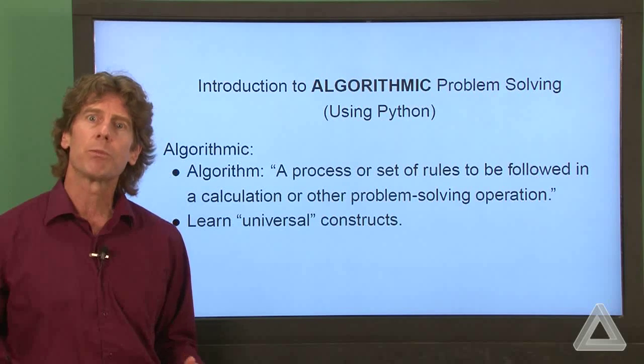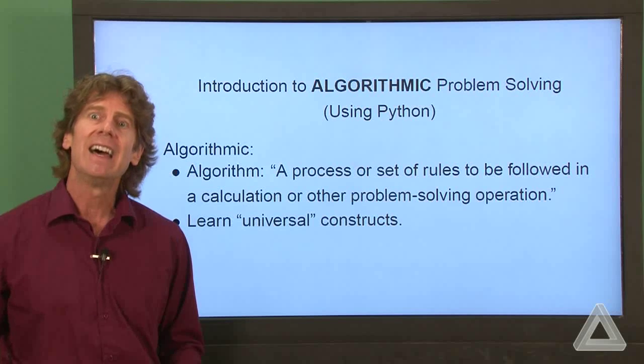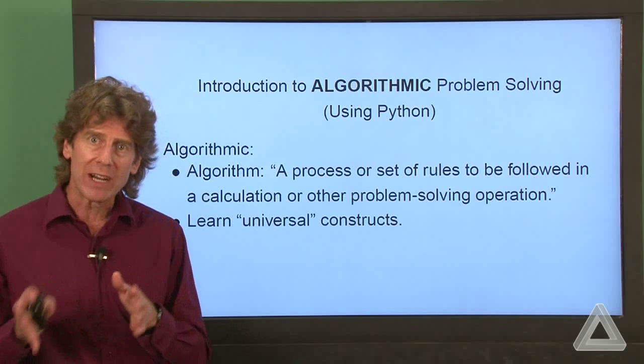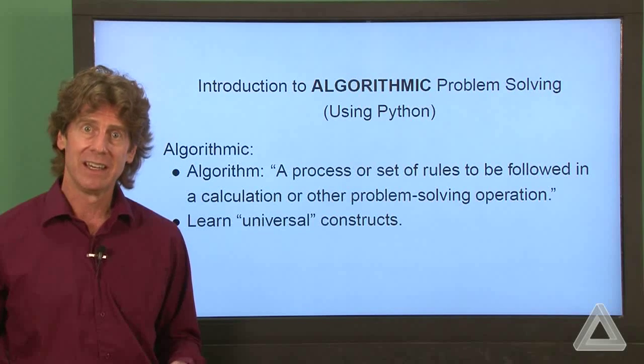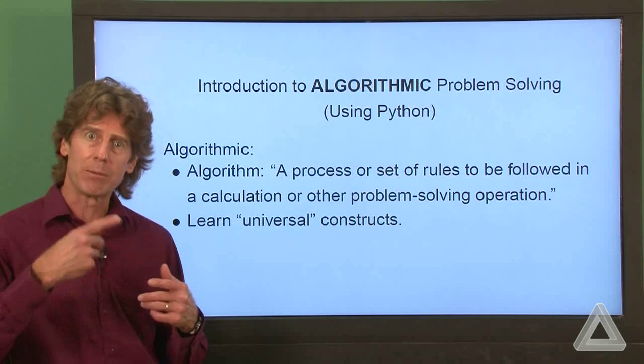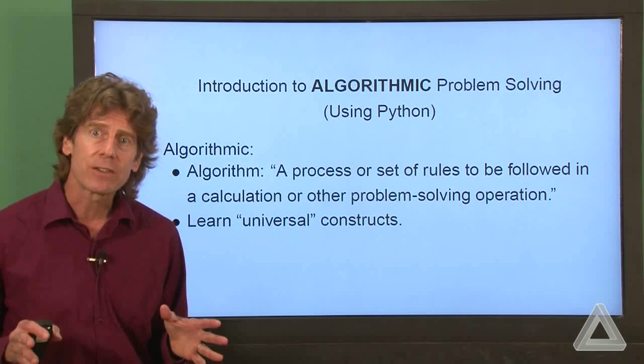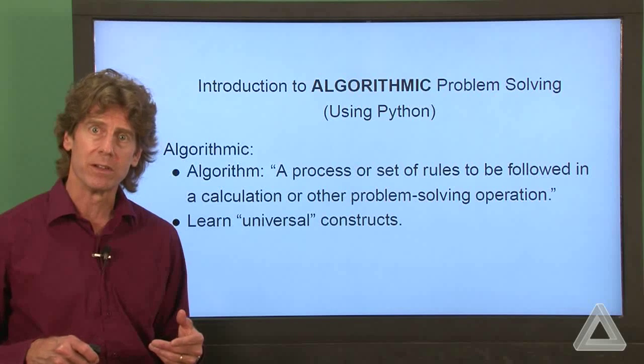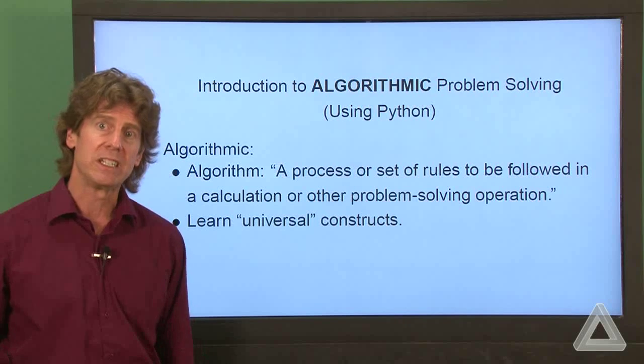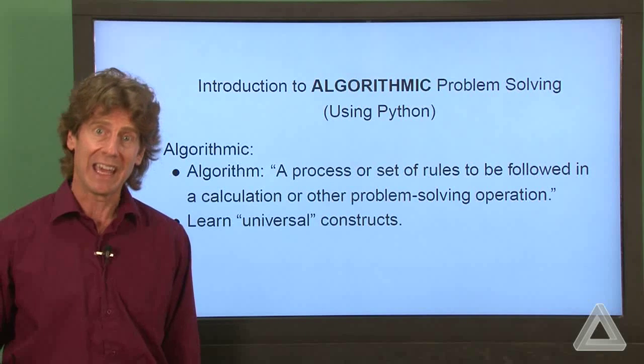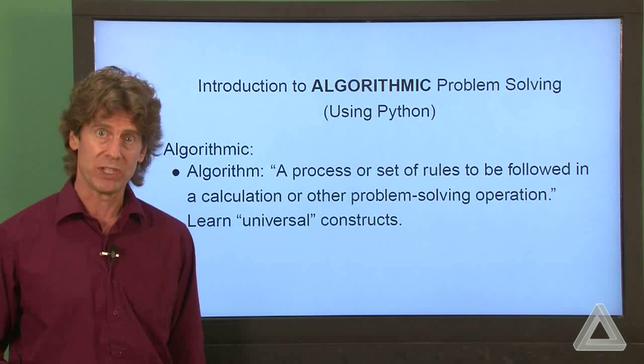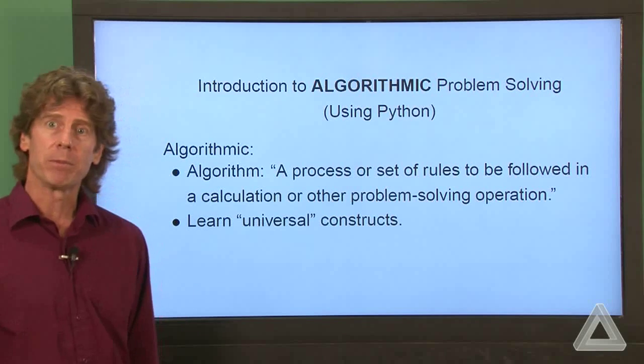So, for example, we'll discuss programming constructs such as a decision structure where the program performs different operations depending on the outcome of some test. And we'll discuss loops where a set of operations is repeated a certain number of times. And these constructs, and many others that we'll learn, appear throughout computer science and programming, they aren't specific to the particular language we'll use. And in a sense, these constructs are universal to programming, and more generally, to algorithmic problem solving.